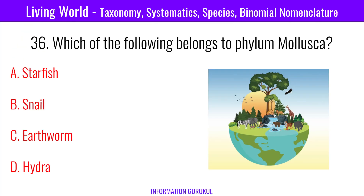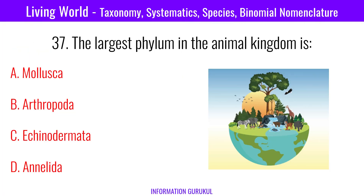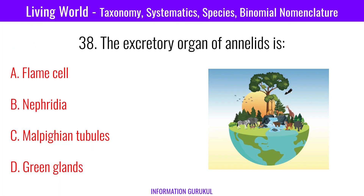Which of the following belongs to phylum Mollusca? Snail. The largest phylum in the animal kingdom is Arthropoda. The excretory organ of Annelids is nephridia.